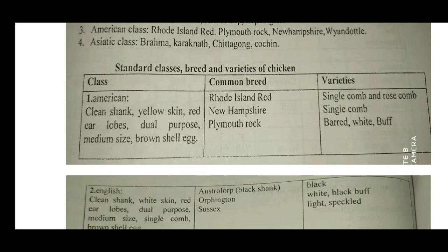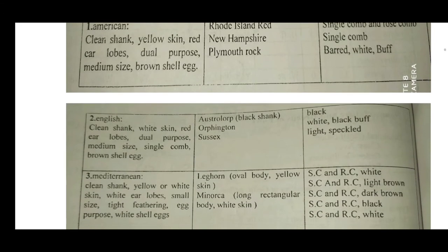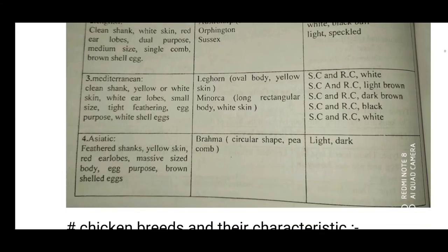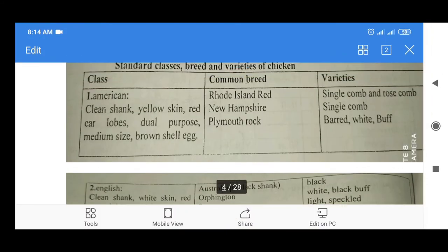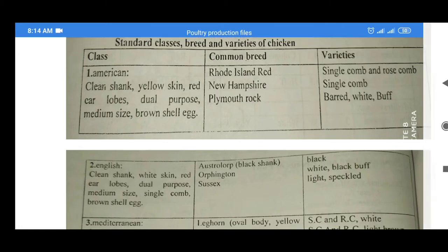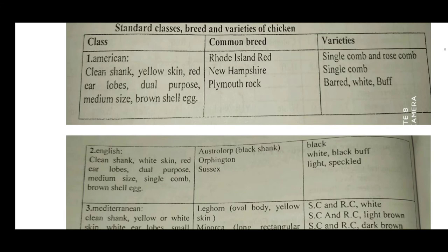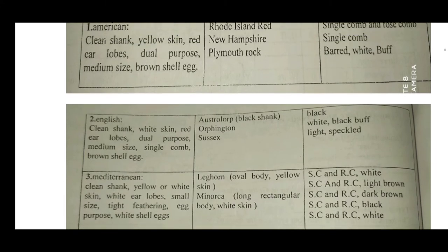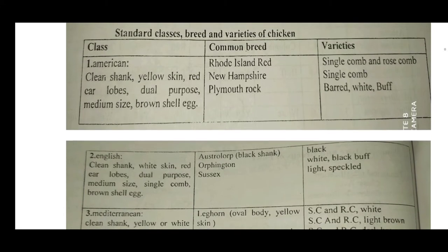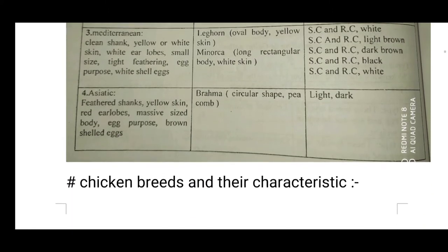The standard class breeds and varieties of chickens are organized into four classes: first American, second English, third Mediterranean, and fourth Asiatic. Common American breeds include Rhode Island Red, New Hampshire, Plymouth Rock, and White Hotel.